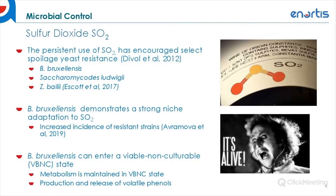Another important state many people forget about is that various spoilage organisms can enter into a viable non-culturable state. This is a physiological state of a microorganism where growth on conventional microbiological media is not observed, but the microorganism remains intact and viable. Organisms beyond Brettanomyces include Acetobacter, Candida stellata, Lactobacillus plantarum, Saccharomyces cerevisiae, and Zygosaccharomyces bailii. Metabolism is maintained in this viable non-culturable state, and these organisms can still potentially produce and release various spoilage components like volatile phenols. It's important to keep that in mind when submitting any analysis for plating, as this will not account for this specific state.